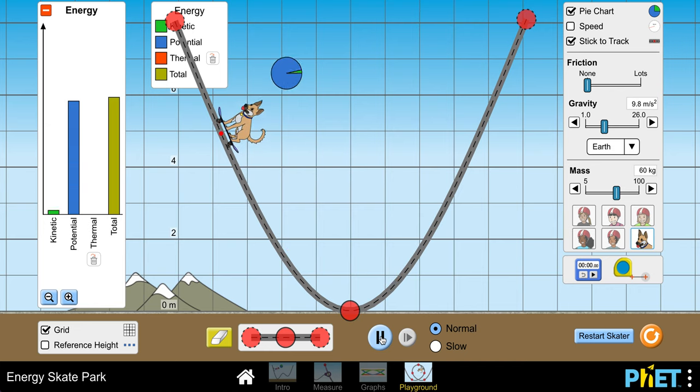And then I'm sure you're bothered that I don't have anything in this column here. And certainly there's this red box in the legend that suggests there could be red here. And that's not showing up, this thing called thermal energy.